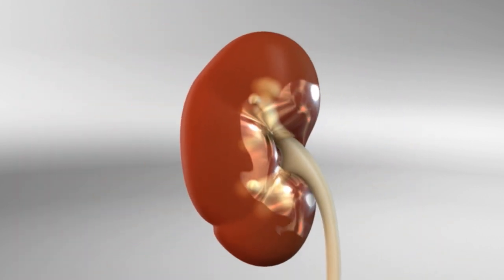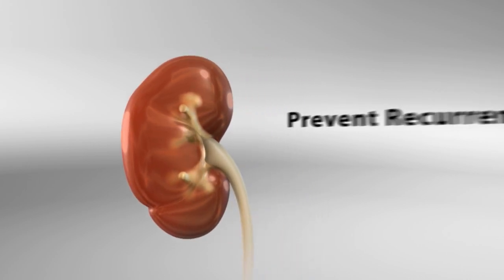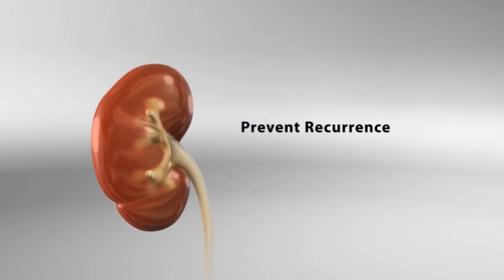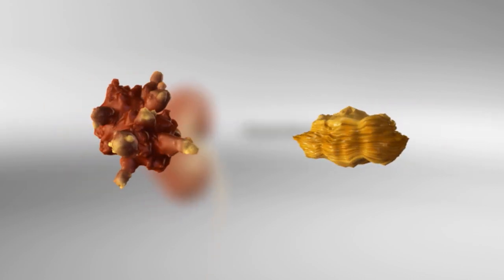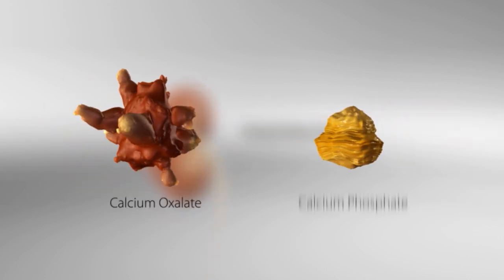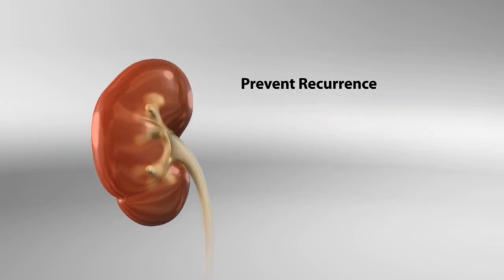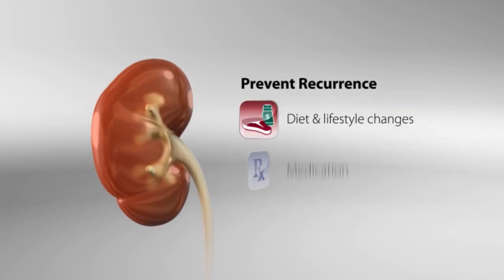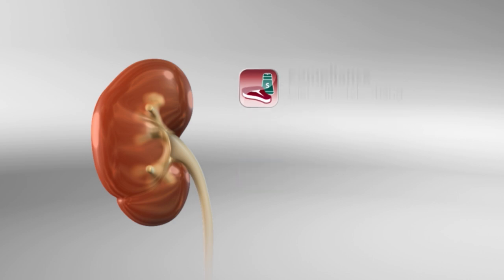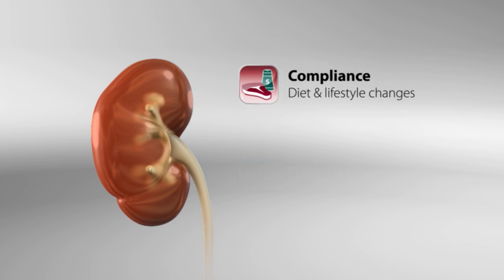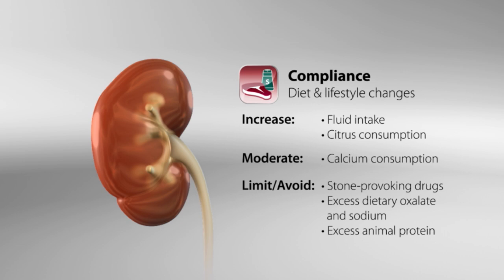There is no cure for kidney stones, but once an acute episode has been resolved, the key to therapy is simple: preventing recurrence. And fortunately, the most common stones — calcium oxalate and calcium phosphate — can be effectively managed with a combination of diet and lifestyle changes and medication. Compliance with proven management guidelines, such as increasing fluid intake and avoiding stone-promoting foods, can significantly reduce stone recurrence.